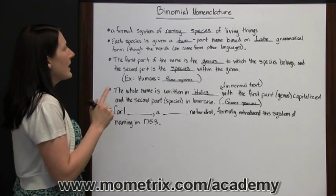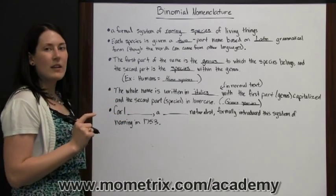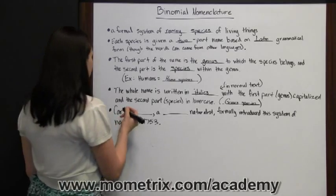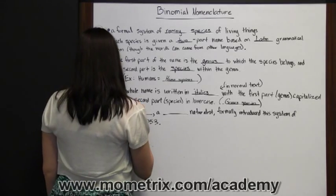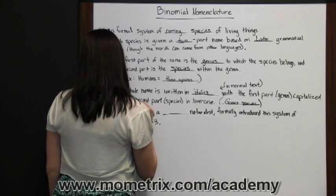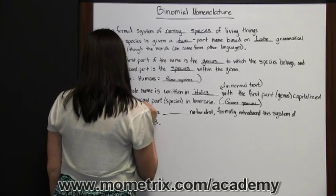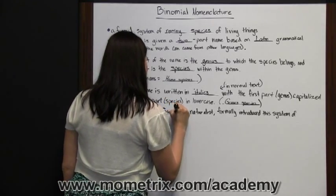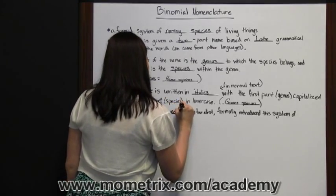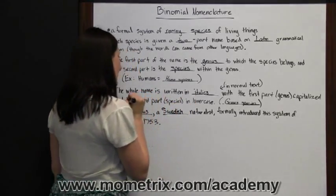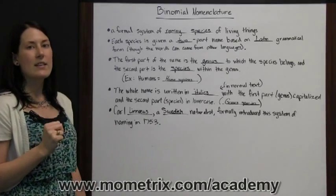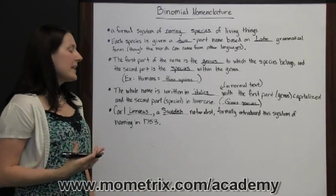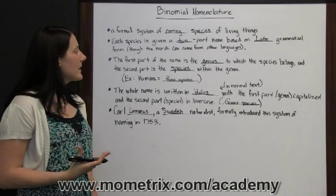This binomial nomenclature — this two-part naming system — was thought up by Carl Linnaeus, who was a Swedish naturalist. He formally introduced this system in 1753, and it picked up and has been around ever since.